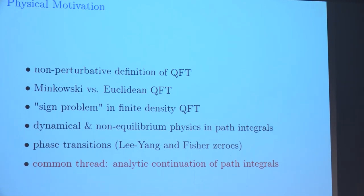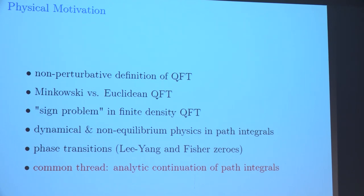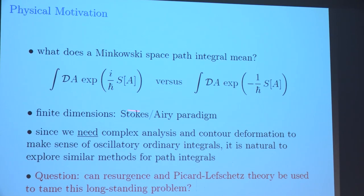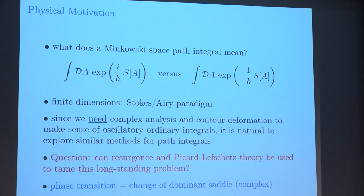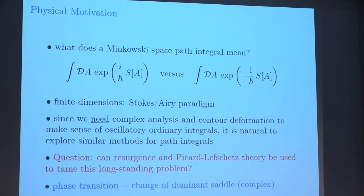I want to talk about phase transitions, which are related to both of those questions. The common thread is making sense of the idea of analytic continuation of path integrals. Physics gives us the Feynman path integral: the amplitude for a quantum process is a sum of phases, e to the i times action. For certain cases we can convert this to a Euclidean path integral by a Wick rotation. For static thermodynamic processes, even in QCD, we can make this transformation and the results agree with experiments — an extremely successful program.